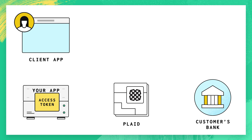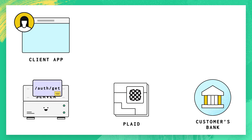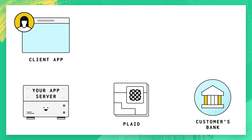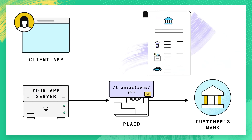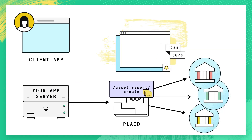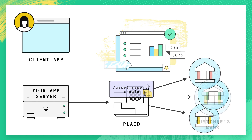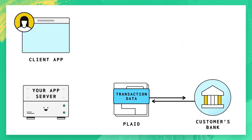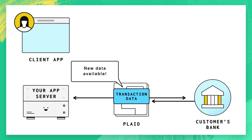At this point you can use the access token to start making calls against the Plaid API. This might include the auth endpoint to retrieve the user's routing and account numbers, the transactions endpoint to get a list of recent or historical transactions, asset reports to help with loan underwriting or decisioning, or one of the many other products Plaid supports. Plaid can also send you webhooks so it can proactively let you know about important updates, like if there's a problem with an account or if more data is available for you to fetch.